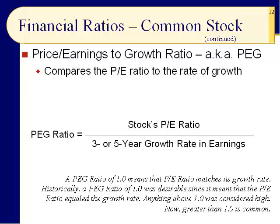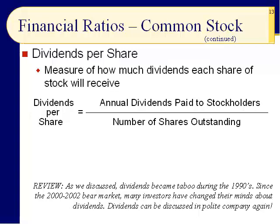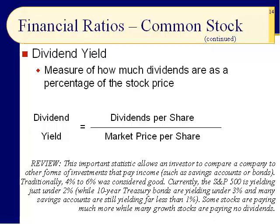Slide thirteen: dividends per share — this is review. You take the dividends and divide by the number of shares outstanding. Dividends became taboo during the 1990s, but since the 2000–2002 bear market, many investors have changed their minds. Slide fourteen: dividend yield — another important statistic telling us how much the stock is paying on a percentage basis. You take dividends per share and divide by the market price. This allows an investor to compare a company to other income-generating investments such as savings accounts or bonds.